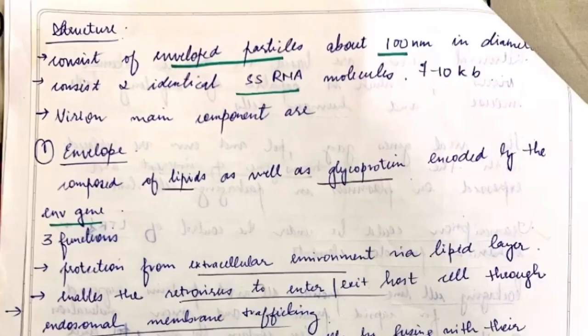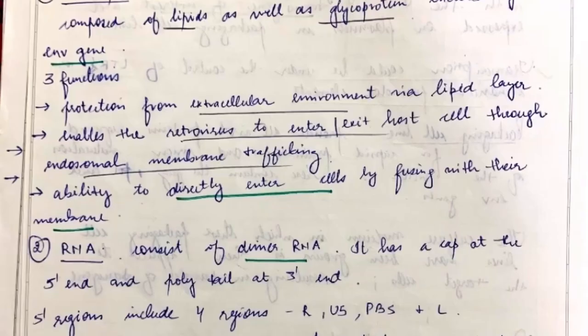At the end, the big circle is the structure which we will study now. The structure consists of enveloped particles, two identical single-stranded RNA, and some virion. Main components are envelope, RNA, and proteins. I've mentioned features about them you can go through them.